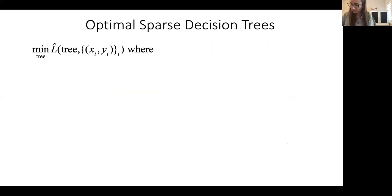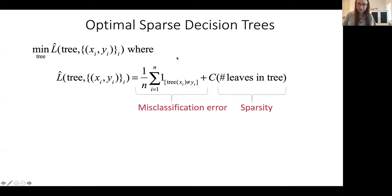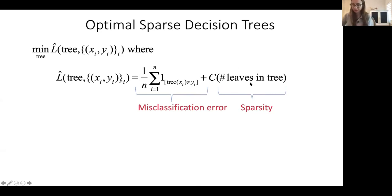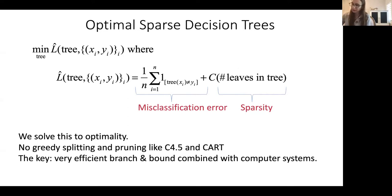We aim to provide the first practical algorithms for producing optimal binary-split decision trees, minimizing misclassification error regularized by the number of leaves in the tree — essentially L0 loss with L0 regularization. We don't use greedy splitting and pruning. We developed a specialized branch-and-bound method that leverages computational caching. Here is an example of an optimal decision tree on that Florida recidivism dataset from the beginning of the talk, fully optimized on that dataset.